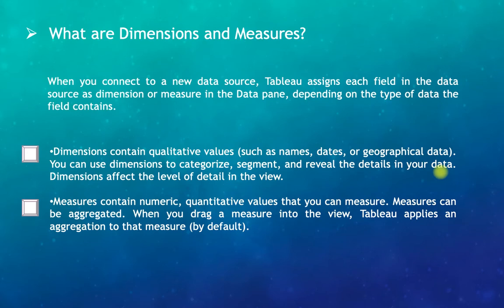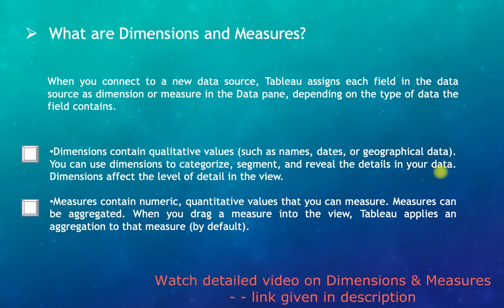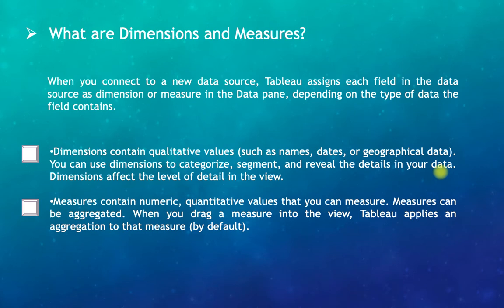The next question is: what are dimensions and measures? Whenever you connect to a new data source, Tableau assigns each field as a dimension or measure in the data pane depending on the type of data the field contains. Dimensions are qualitative values — for example, a product name, an order date, or geographical data like region or pin code. You can use dimensions to categorize, segment, and reveal details in your data. When added to a visualization, dimensions affect the level of detail in the view.